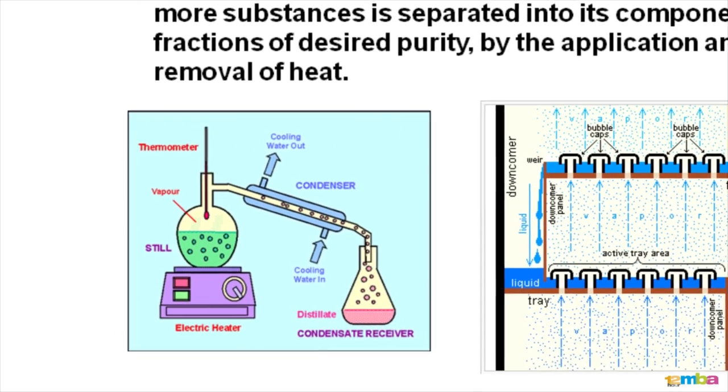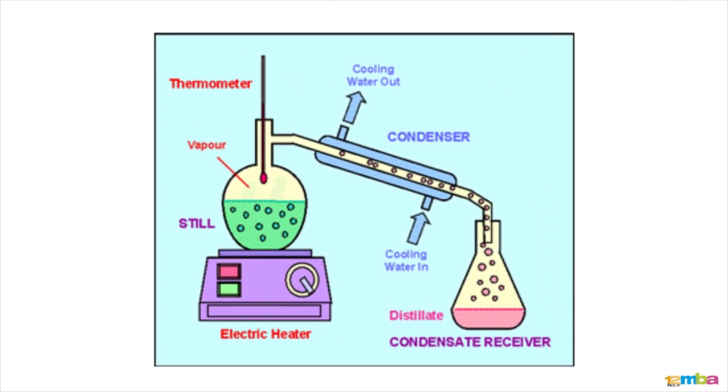On the left side, you see an illustration of a simple lab distillation where a flask containing hydrocarbon is heated on a simple heater, and then the vapor that comes out from this heating is condensed by cooling it, and the cool product is then collected in a flask.